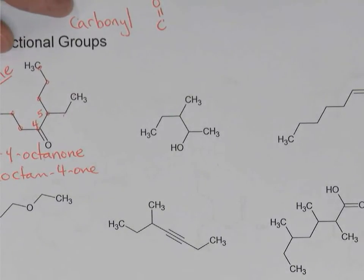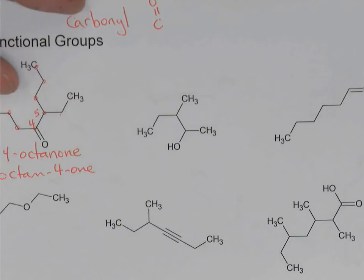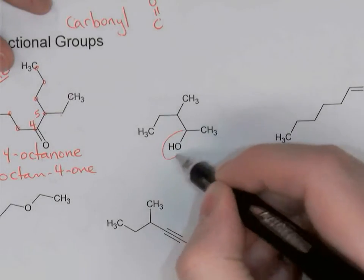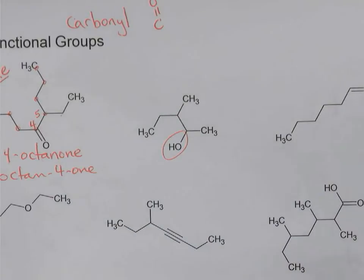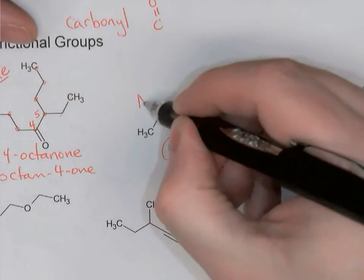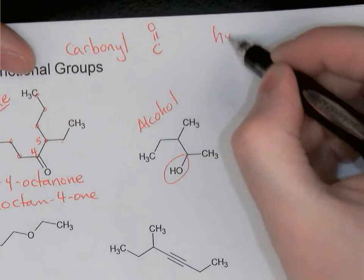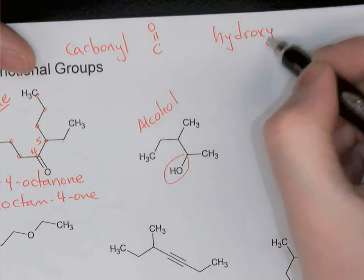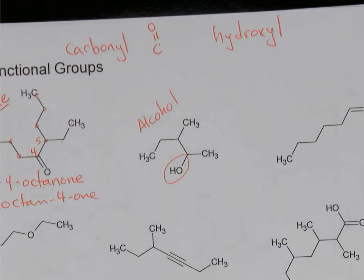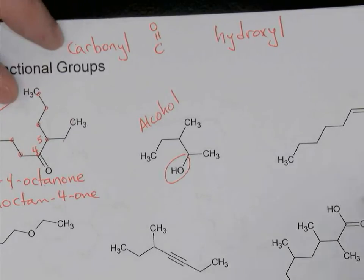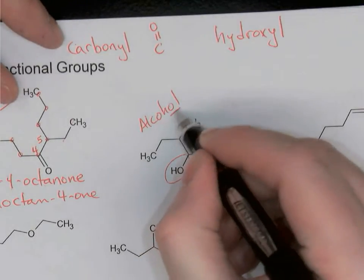The second molecule — what functional group do we see present? The functional group is right here: this OH. When I see an OH as a functional group, I know I'm looking at an alcohol. The OH is referred to as a hydroxyl group. Don't confuse that with a hydroxide ion, which is OH⁻. This OH is bonded covalently to the molecule, so it's called a hydroxyl group. This is an alcohol, which means the name is going to end in OL.